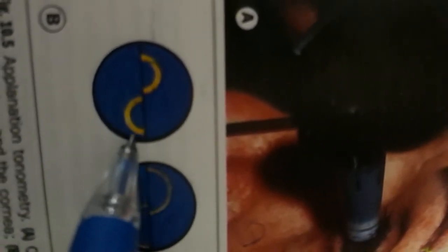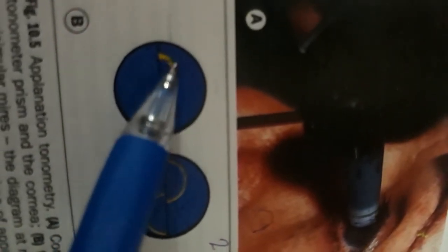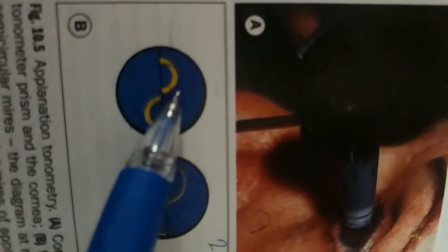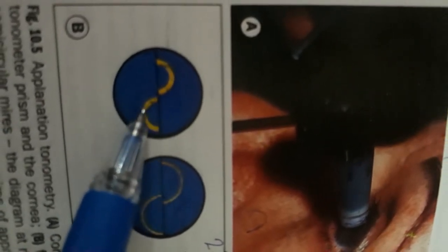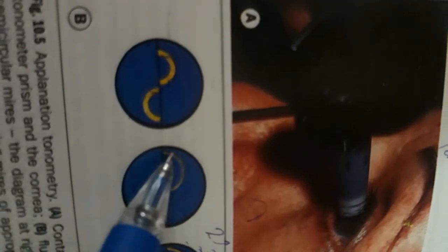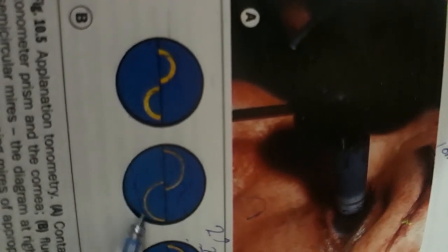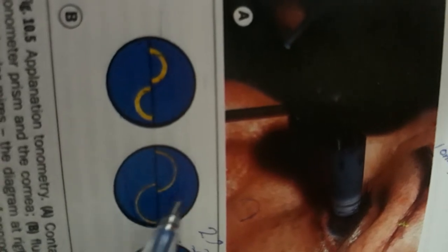A source of error is inappropriate fluorescein pattern. If fluorescein is excessive, it will result in mires being too thick. If fluorescein is insufficient, then the mires will be thin.